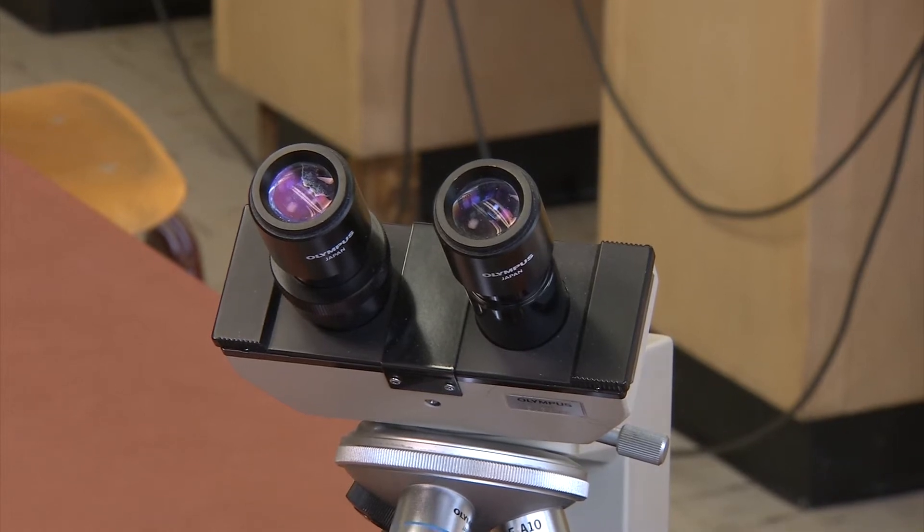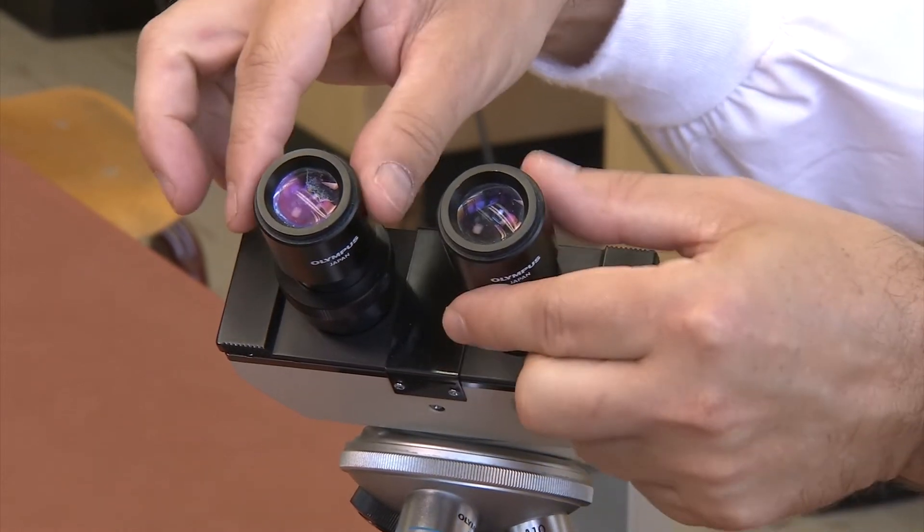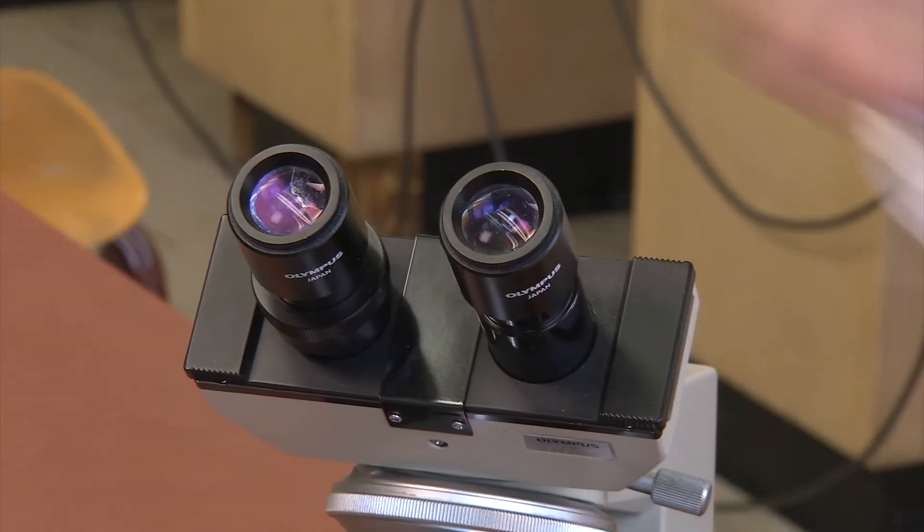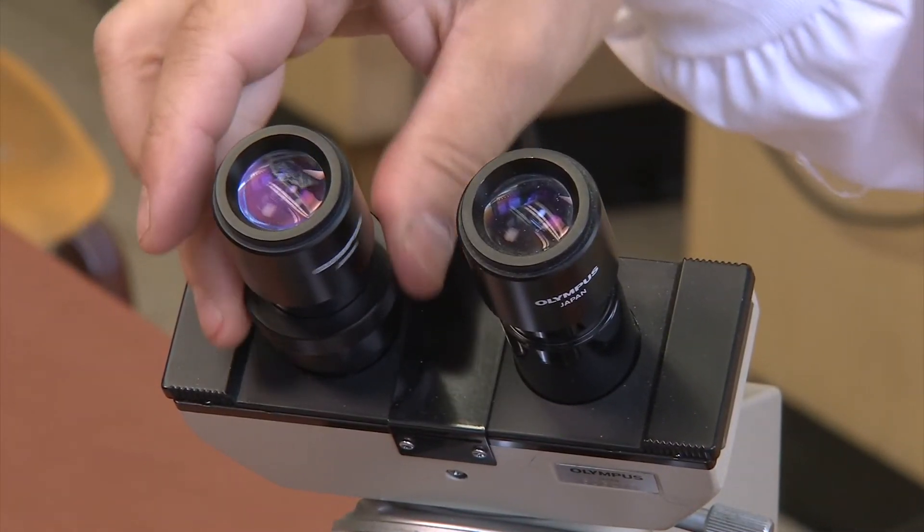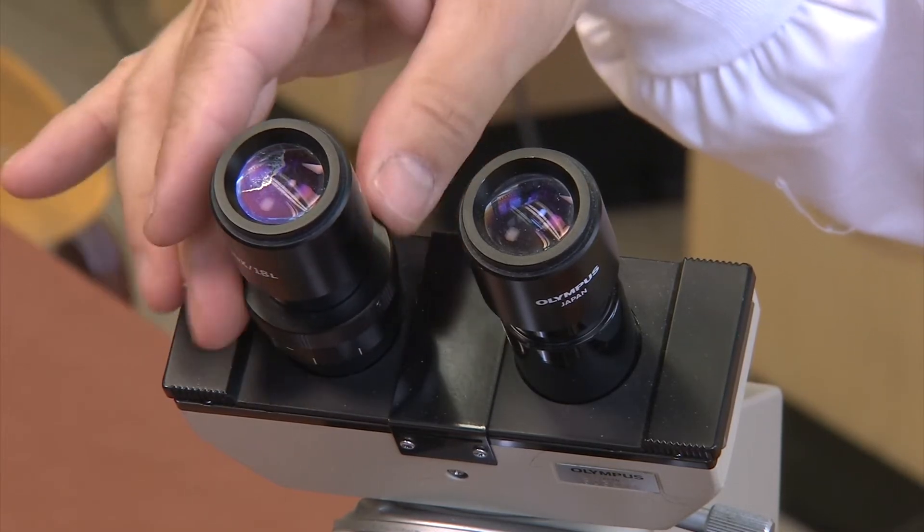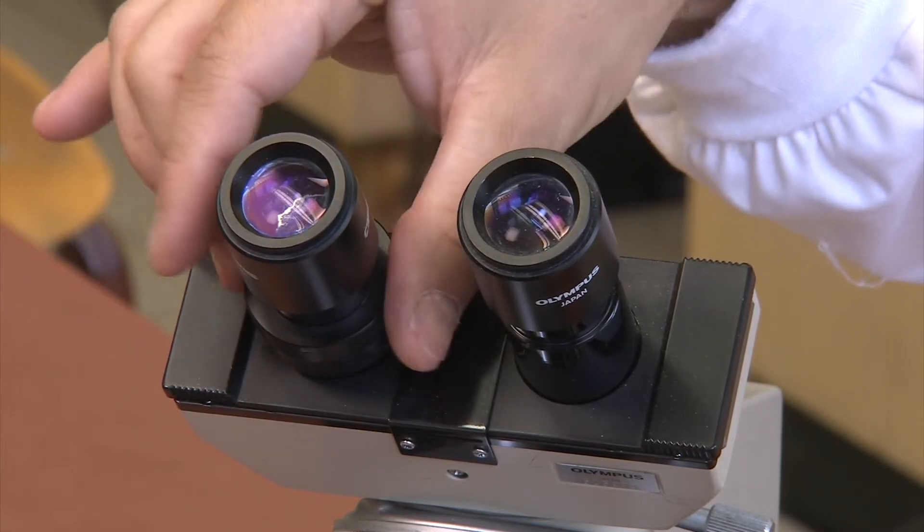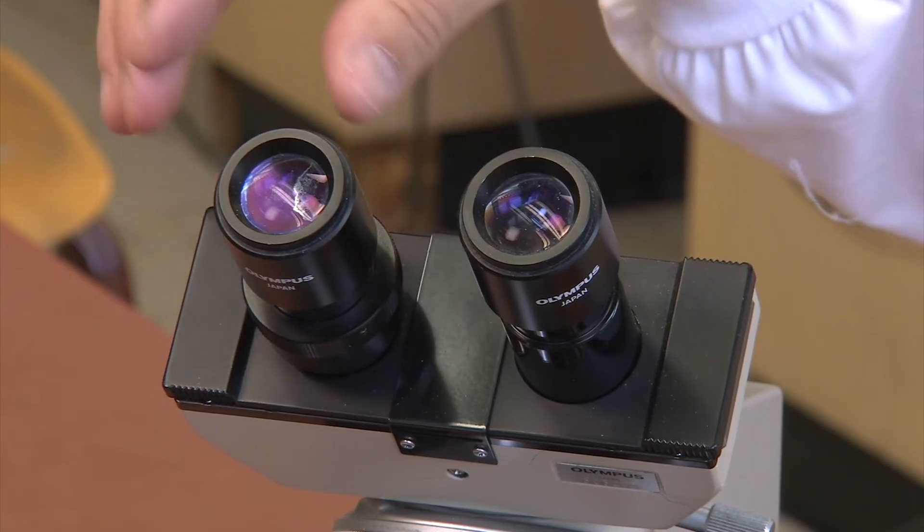Beginning at the top, we have the two ocular lenses, also called the eyepieces, which you look through to see your slide. The left ocular has an adjustment ring near its base. This ring is used to help compensate for the differences in vision between your eyes.